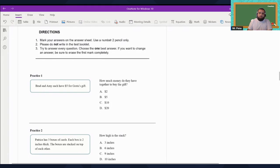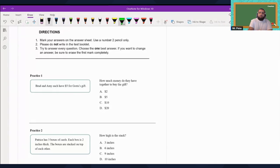Over here it says number one, Brad and Amy each have five dollars for greatest gift. How much money do they have together to buy the gift? Well, they each have five dollars, so the answer is going to be ten.